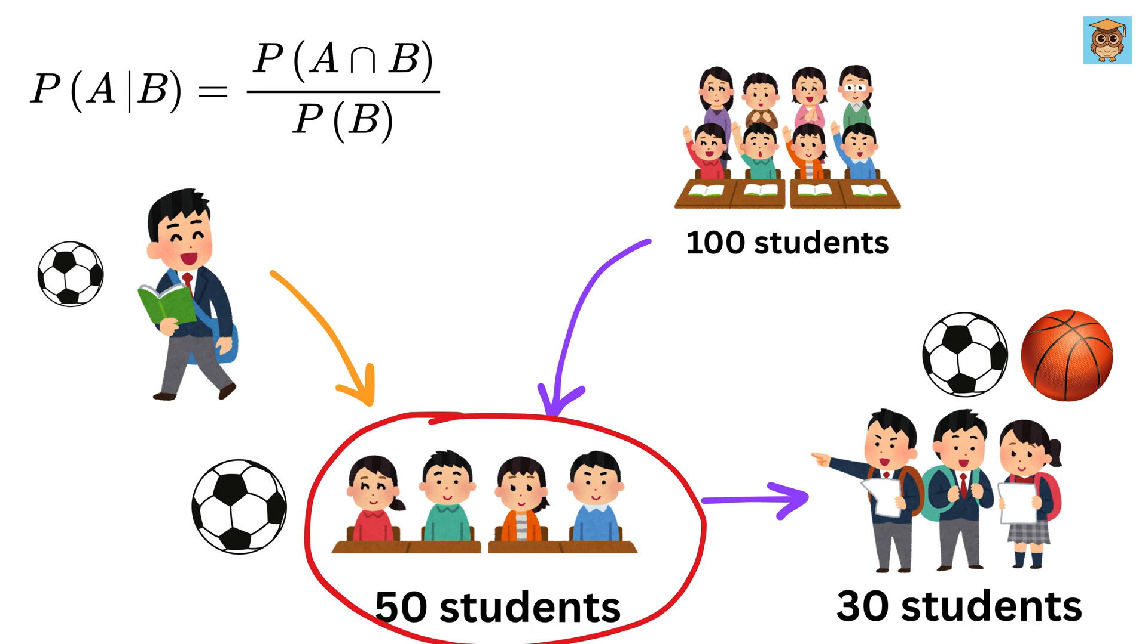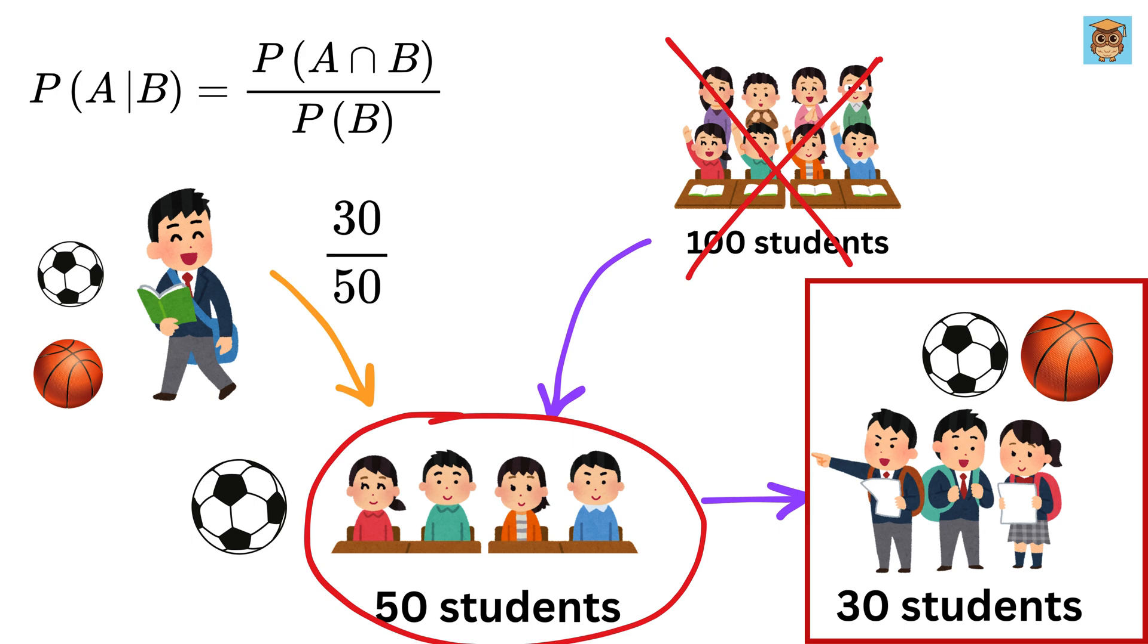Now suppose someone says, "Hey, I picked a student and I already know that the student plays football. So what are the chances that the same student also plays basketball?" Since we already know this student plays football, we're no longer thinking about all 100 students. We're only focused on the 50 who play football, and out of those 50, 30 also play basketball. So the chance that this student plays basketball given that they play football is simply 30 divided by 50, which is 3 divided by 5, or 60%. So the answer is 60%.